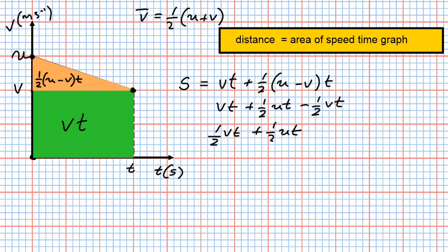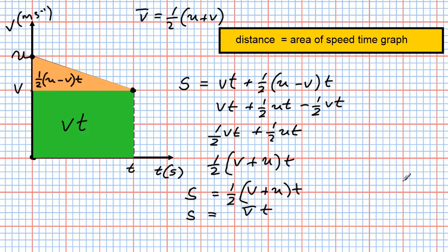Taking out the common factor of one half t, we get s equals one half t times (v plus u). From the data book, distance equals average speed times time, so it follows that average speed v-bar must equal one half of (v plus u), or equivalently one half of (u plus v). That's where we get the equation used in question one.